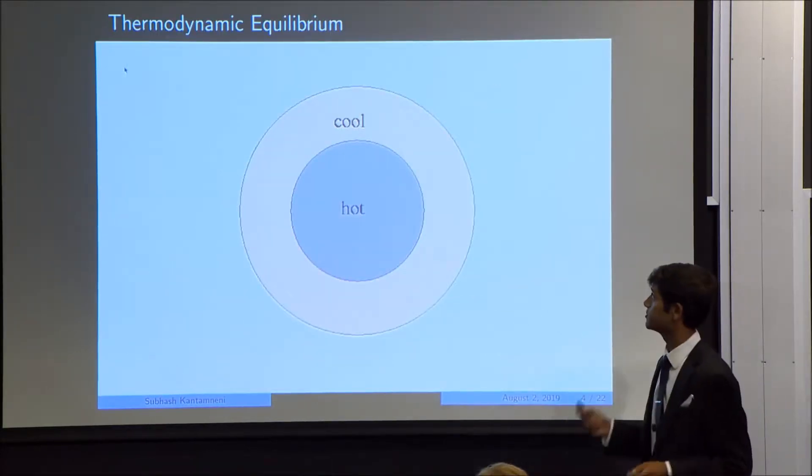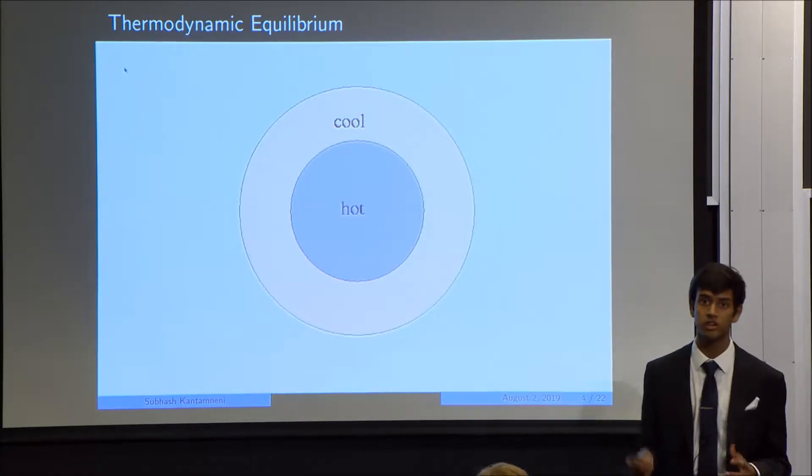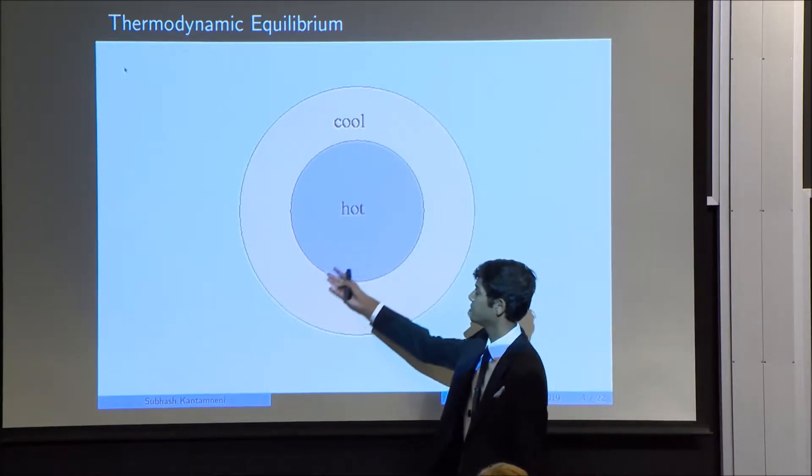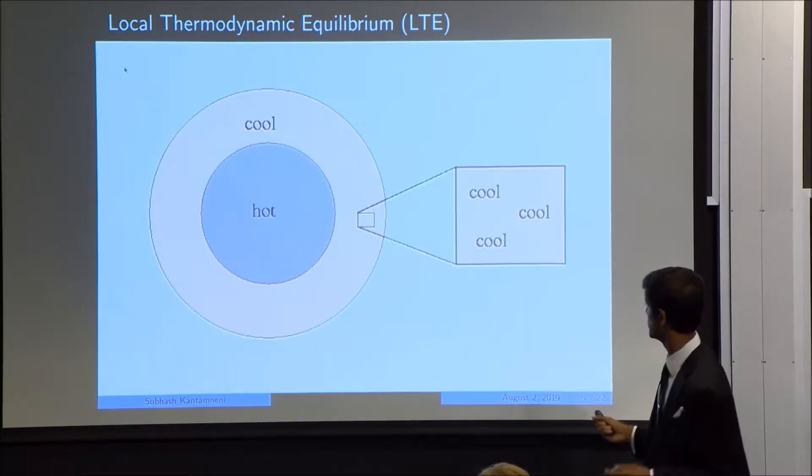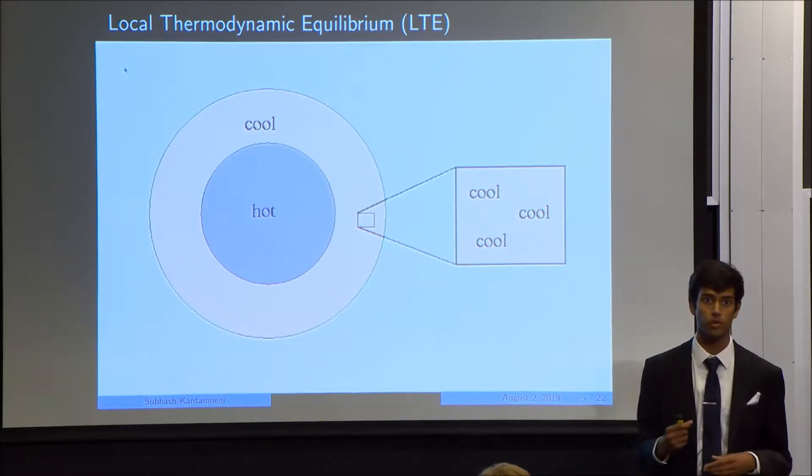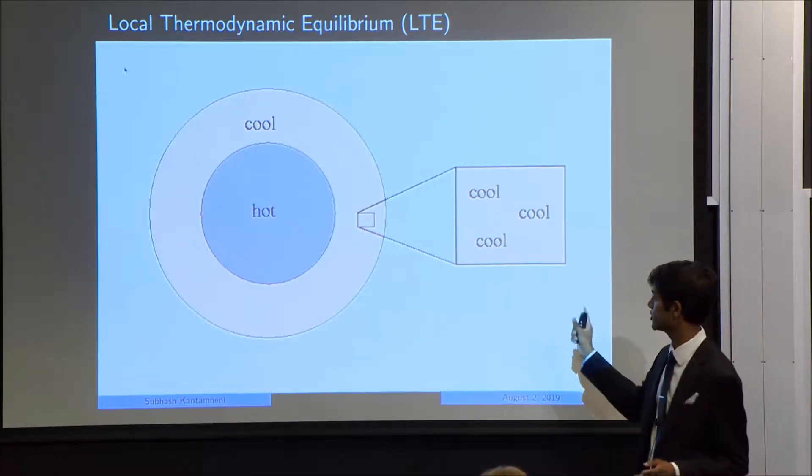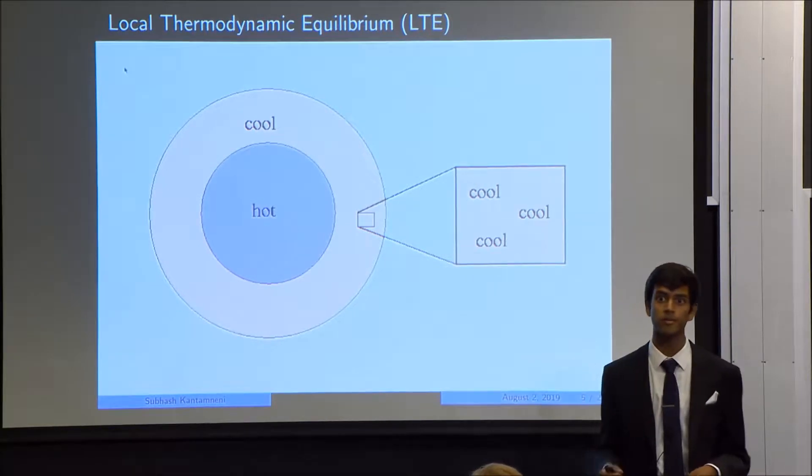So these stellar models are based on the principle of thermodynamic equilibrium, which assumes that a region has a constant temperature and pressure throughout. Obviously, a star as a whole is not in thermodynamic equilibrium because it has different temperatures and pressures as a function of its radius. But if we focus on a small enough volumetric element, we can assume a special type of thermodynamic equilibrium known as local thermodynamic equilibrium, or LTE. LTE states that in this volumetric element, the temperature and pressure do not change appreciably, so thermodynamic equilibrium can be assumed.